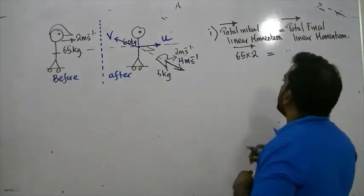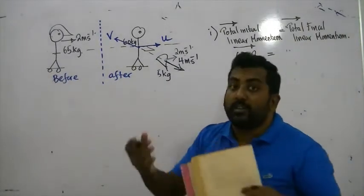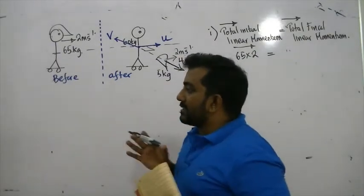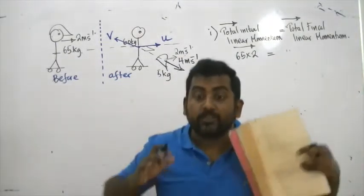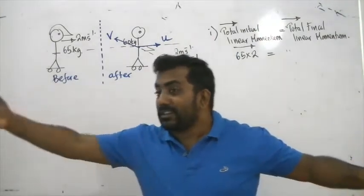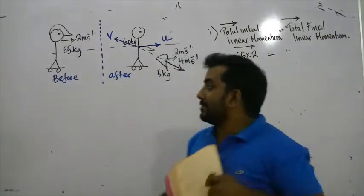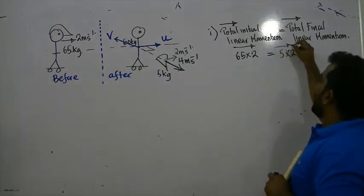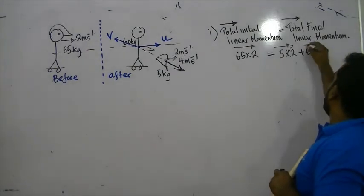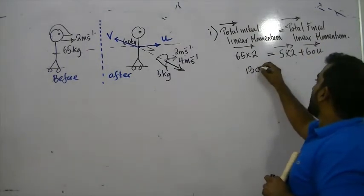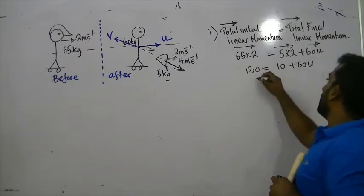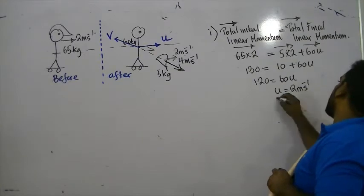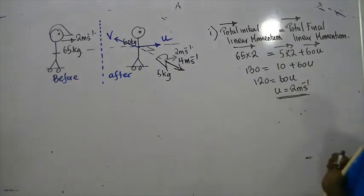When you are going in a bus and you jump out sideways, you still have the velocity of the bus in the forward direction. So: 65 × 2 = 5 × 2 + 60 × U. That gives 130 = 10 + 60U, so 120 = 60U, therefore U equals 2 meters per second.